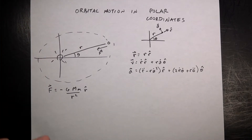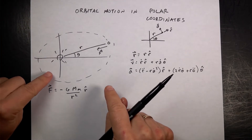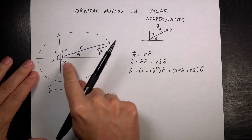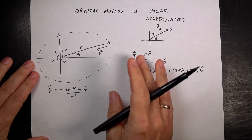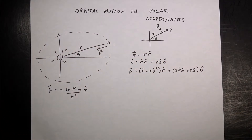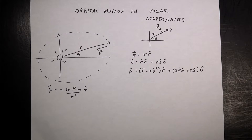Now what I want to do is model the motion of a planet orbiting a star, or the sun, whatever you like, and use polar coordinates. This turns out to be quite useful in a lot of different ways. So let's talk about polar coordinates.